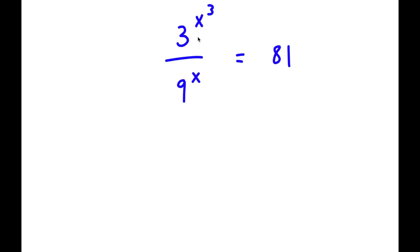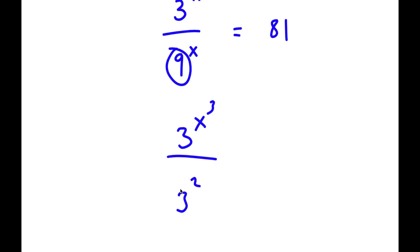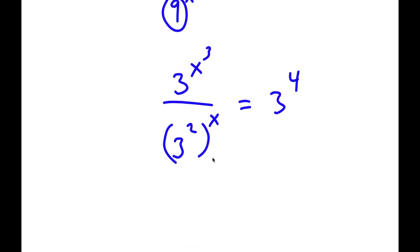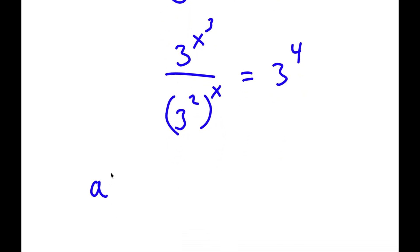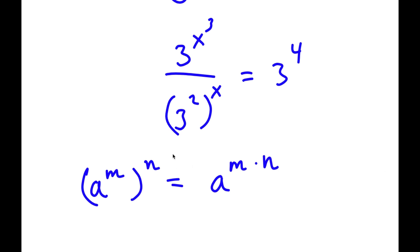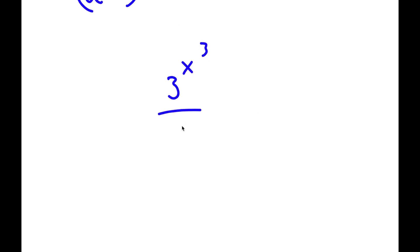In this problem, I have 3 to the power of x³ over 9 to the power of x is equal to 81. The first thing I'm going to do is rewrite 9 as 3 to the power of 2. Now I have 3^(x³) over 3^(2) to the power of x, equal to 81, which I'll rewrite as 3 to the power of 4. Using the rule a^m^n = a^(mn), 3^2^x equals 3^(2x).